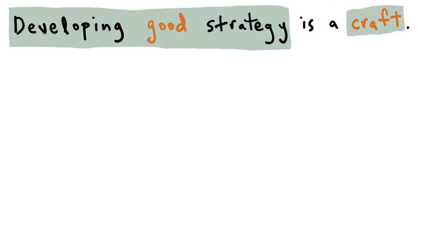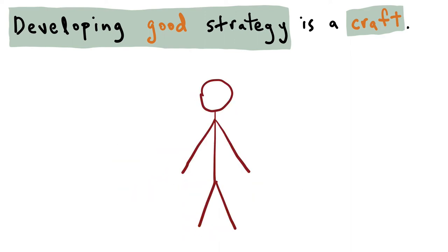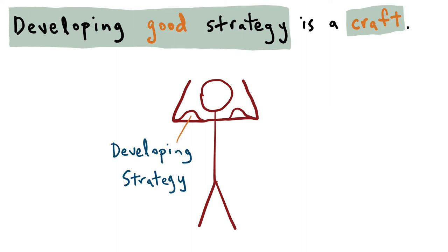Developing good strategy is having a learning process in place where you're constantly going through cycles of aligning, acting, and reflecting. The more you do this, the more you build up your muscles for both developing strategy and for acting strategically.